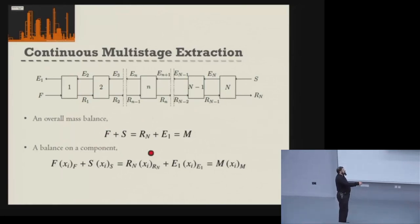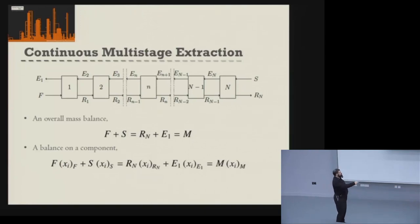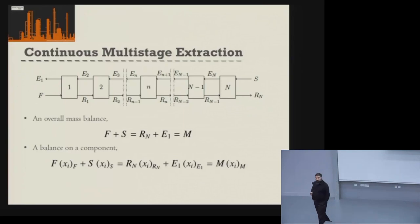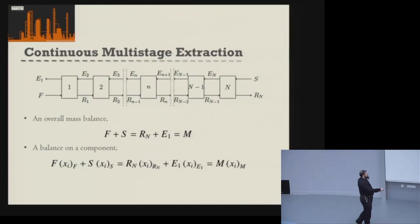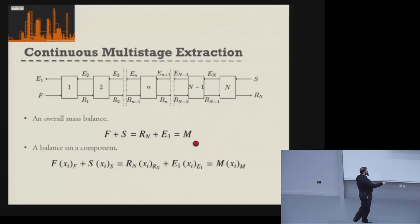We can start with a total overall mass balance — that's a mass balance of what goes into our system at either end, which is the feed and our solvent, and what comes out. That's E1, our final extract product, and RN, our final raffinate product. These sum to give our total material in the system, M. We can also look at a particular component i in the feed, solvent, final extract, and final raffinate.